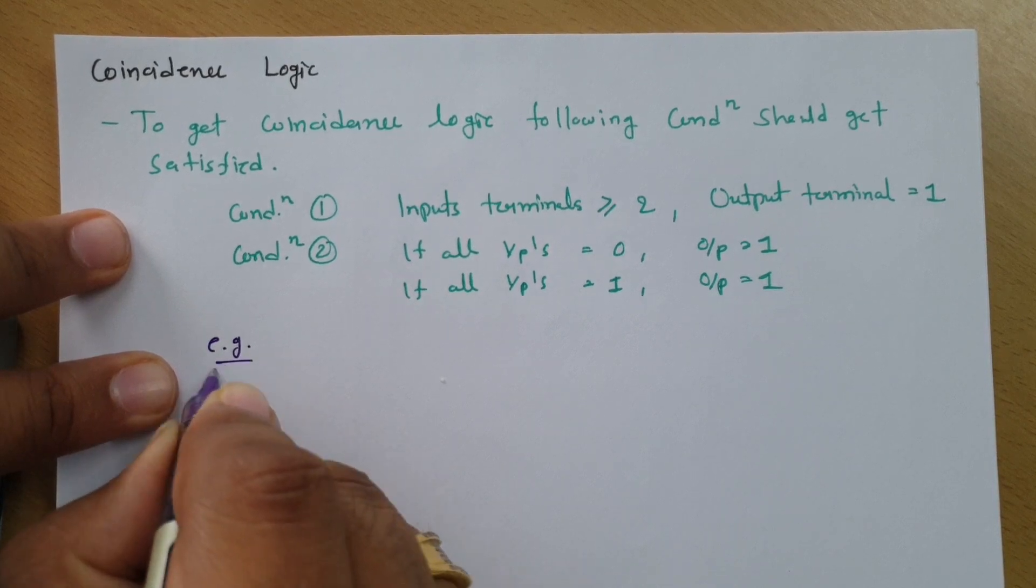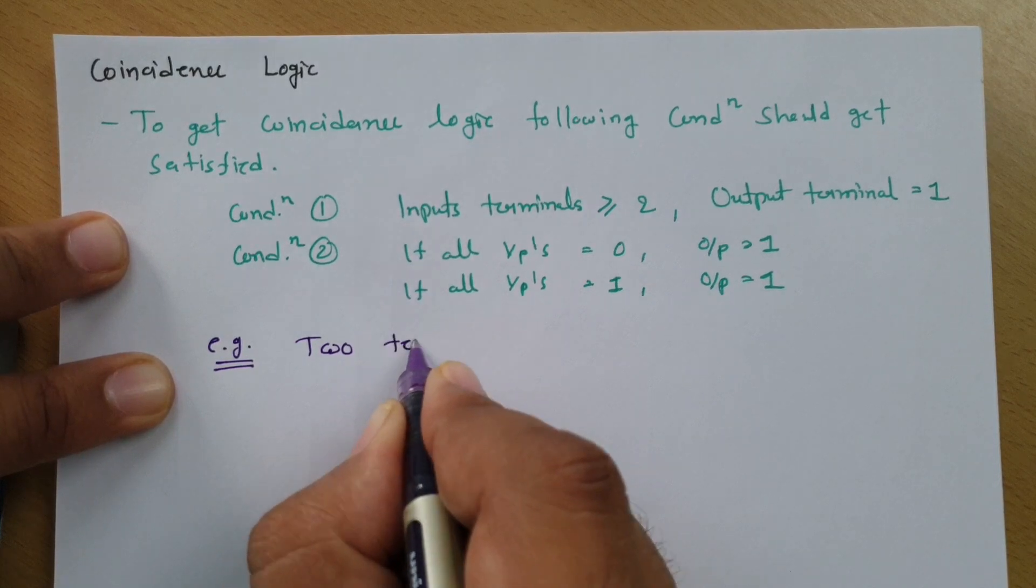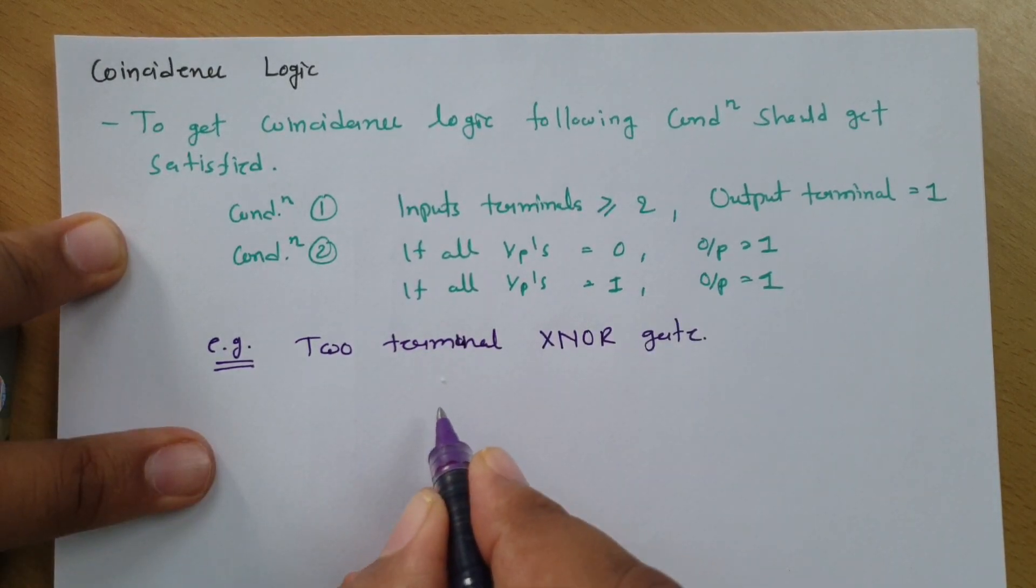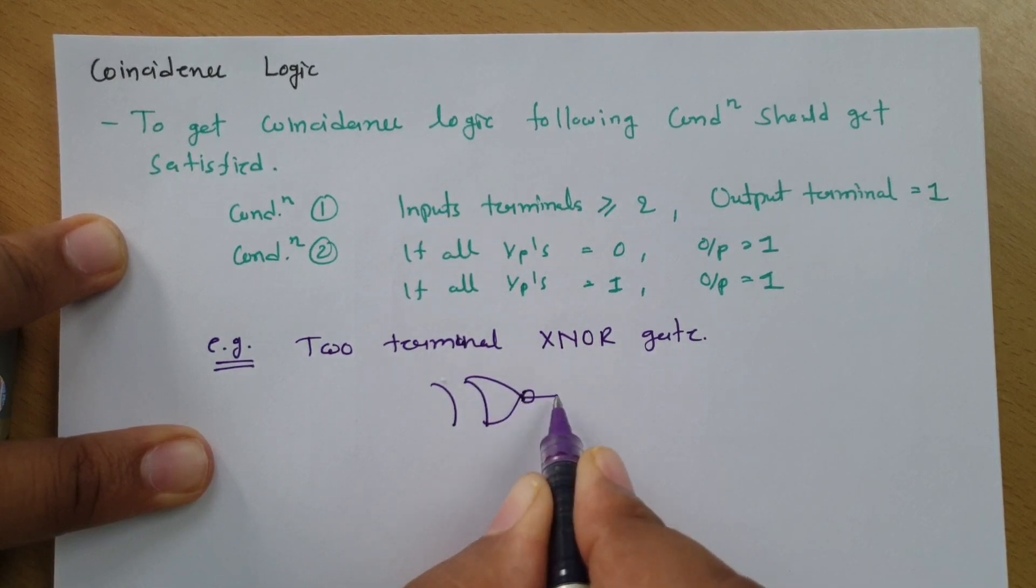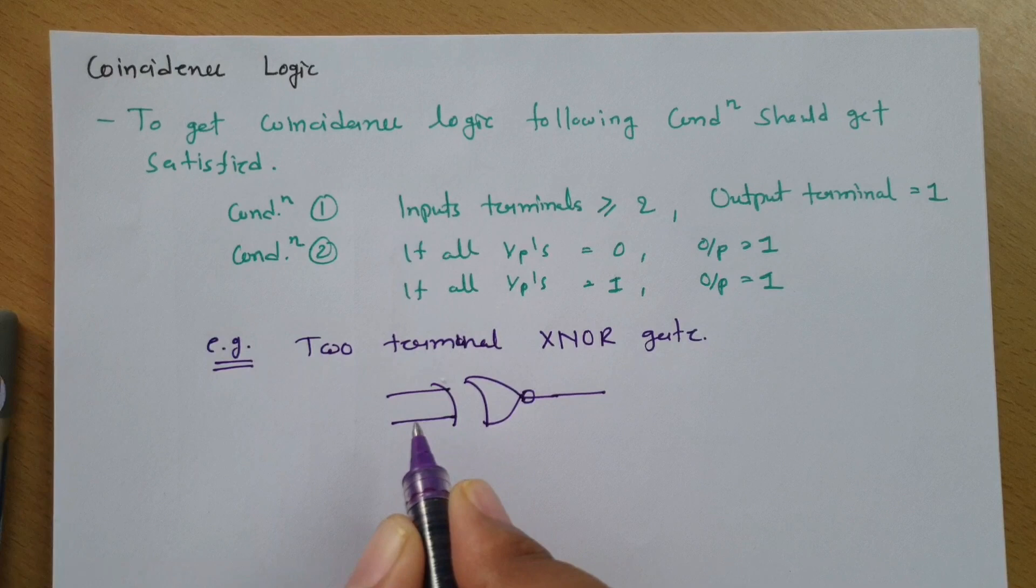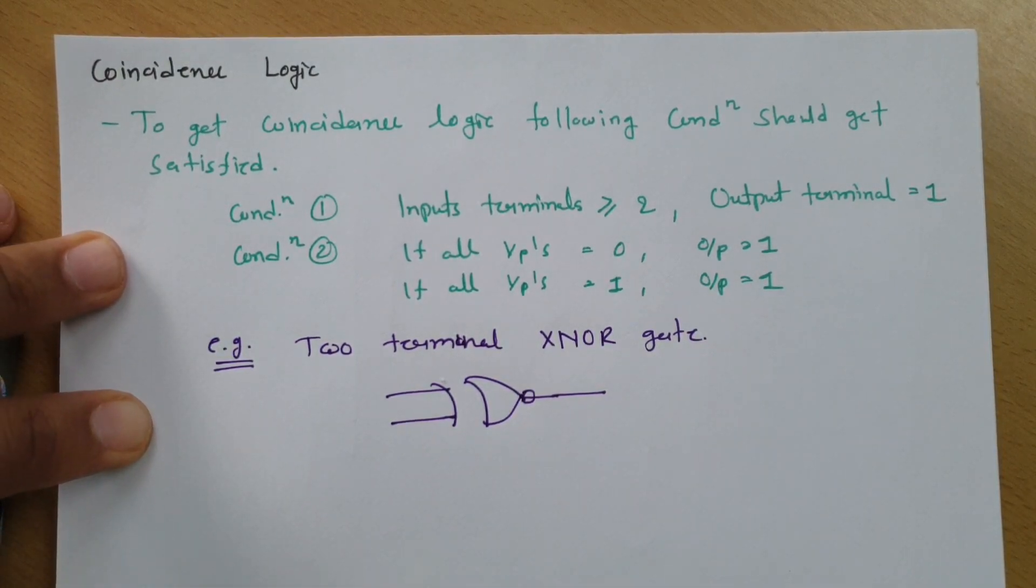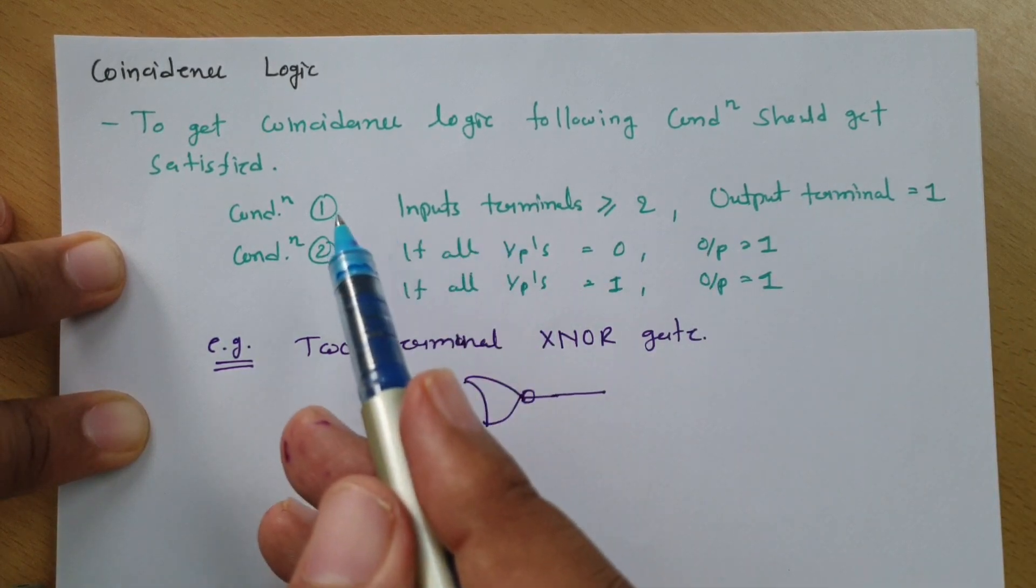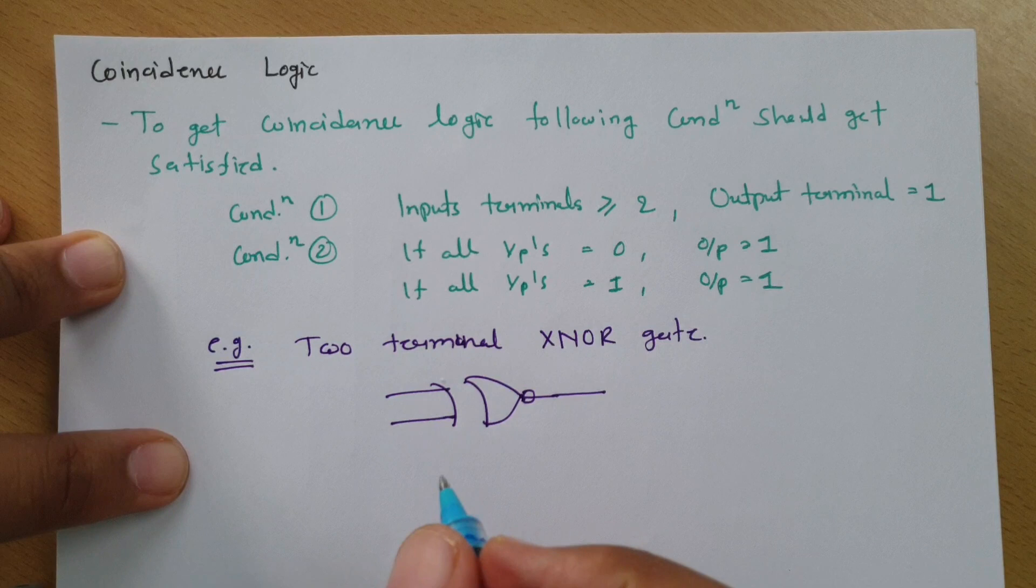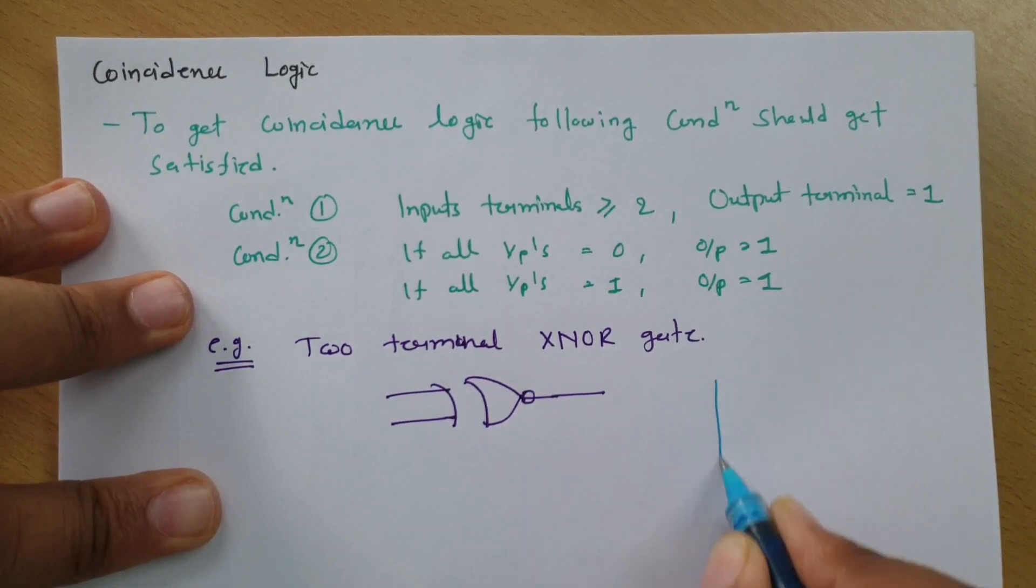First, I'll consider an example of a two-terminal XNOR gate. With a two-terminal XNOR gate, if you observe, this is my output, and here we have two terminals as input. If you see the first condition, there are two terminals here and one terminal here, so the first condition is satisfied. Now to check the second condition, we need to see the truth table.